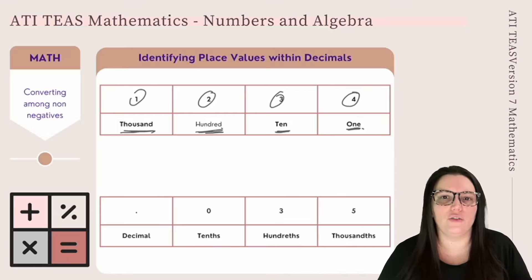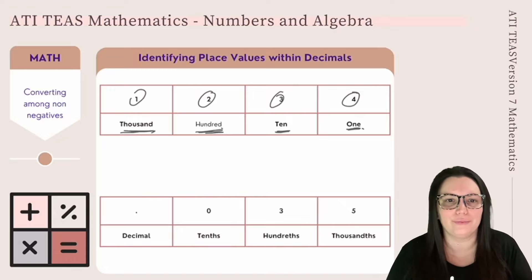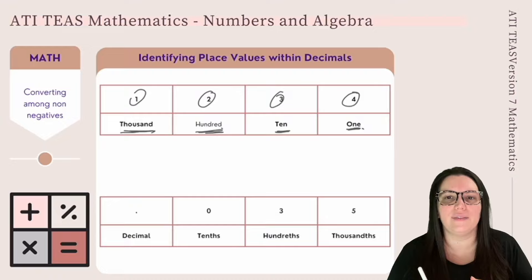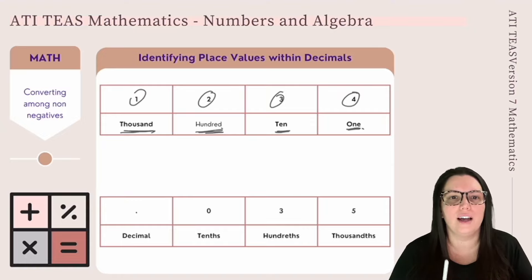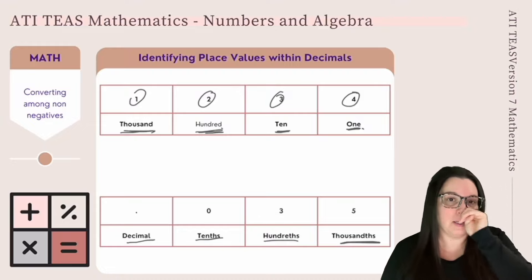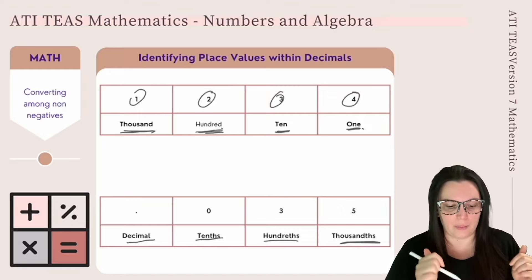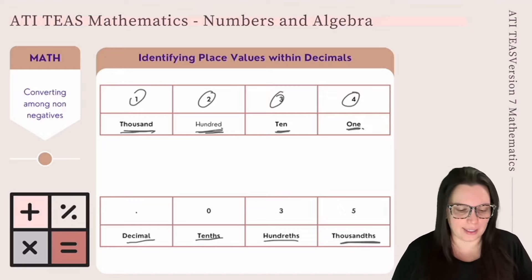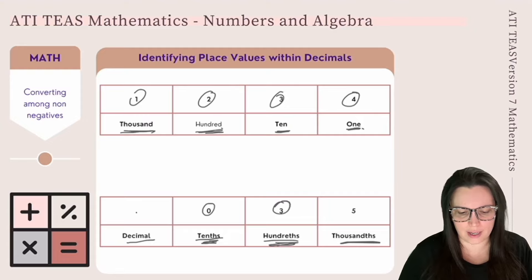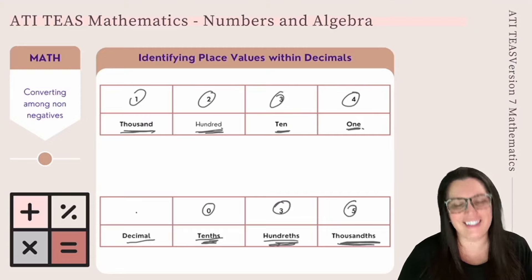To find the place value of a digit, you look at its position in the number. The place value will be the base — 10, 100, 1000, and so on — to which that position corresponds. The decimal part of a number can also be read using place values. The digits to the right of the decimal have place values in the tenths, hundredths, and thousandths places. For example, in 0.035, the zero falls in the tenths place, the three falls in the hundredths place, and the five falls in the thousandths place.